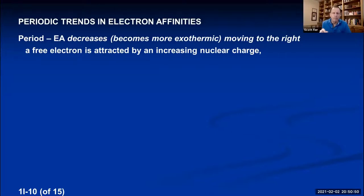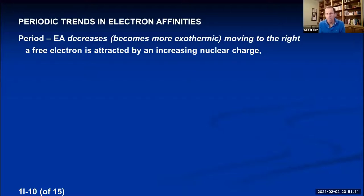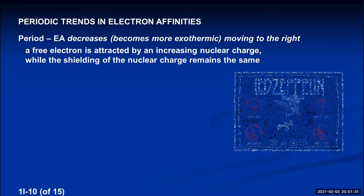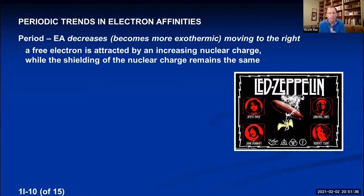In a group, electron affinities increase going down — they become less exothermic moving down a column. Even though nuclear charge increases going down, the greater shielding blocks the nuclear charge, so a free electron isn't attracted as much and doesn't release as much energy. The shielding effect dominates, making electron affinities less exothermic going down. All periodic trends ultimately follow the same concept: nuclear charge versus shielding.